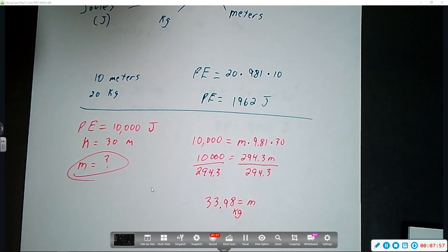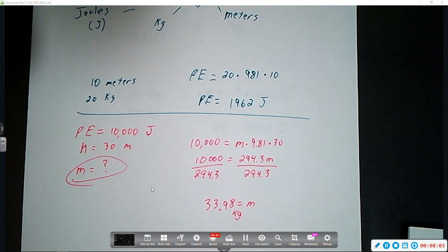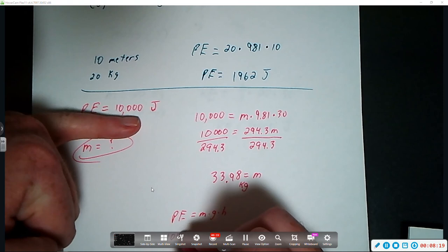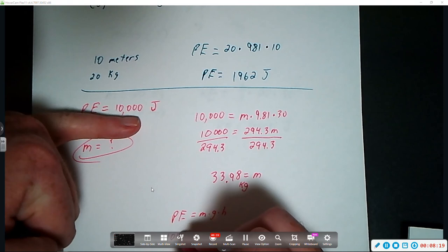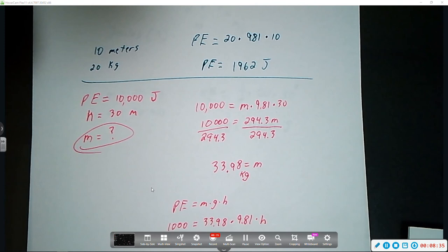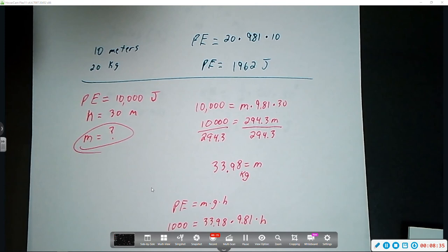If you knew something, let's say, just using this same example, let's say we didn't know the height. The way you would set up that equation would be, we still have potential energy equals mass times gravity times height. So, if you're trying to solve for height, we've got potential energy would be 10,000, is equal to the mass, which we just calculated here, 33.98 times gravity, which is 9.81 times our height, which is what we would try to calculate.